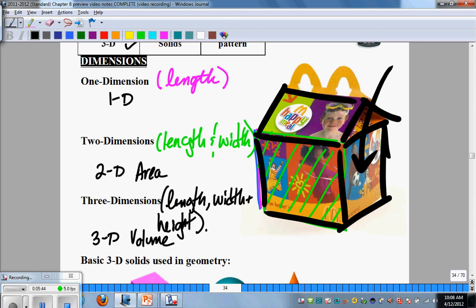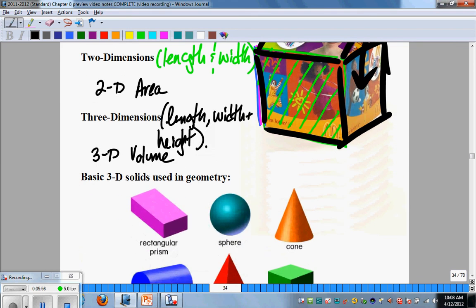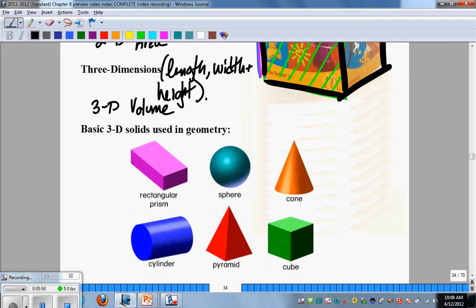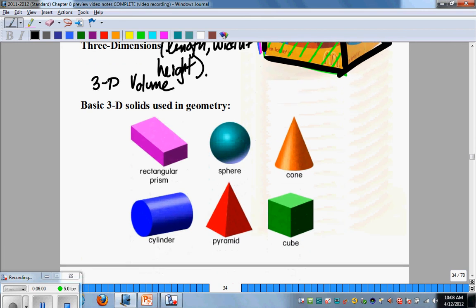This section we're going to be talking about solids. Solids is a basic generic term for any shape that is three-D that you can put your hands on. Your calculator is a solid, pencil in your hand is a solid, the table you're working on is a solid. Anything you can physically grasp your hands around technically is a solid.